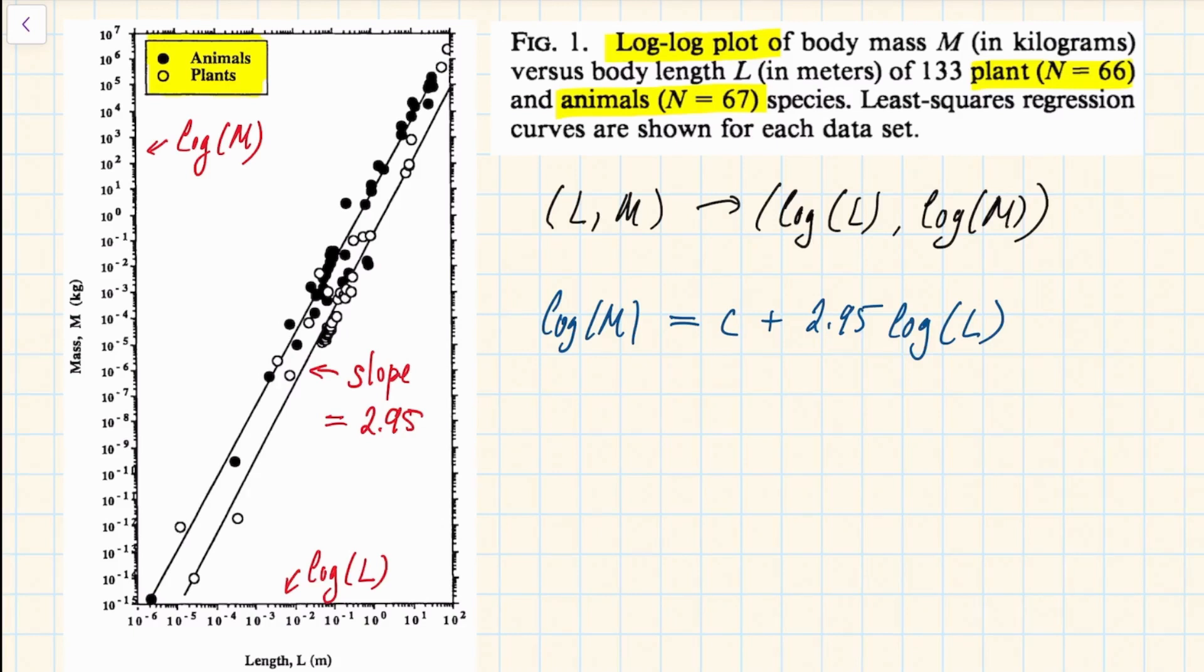Now from here we can find the relationship between mass and length just by using the properties of the logarithms. So we can rewrite the right-hand side as the logarithm of 10 to the power c times L to the power 2.95. And this means that the mass will be some constant 10 to the power c times the length to the power 2.95.